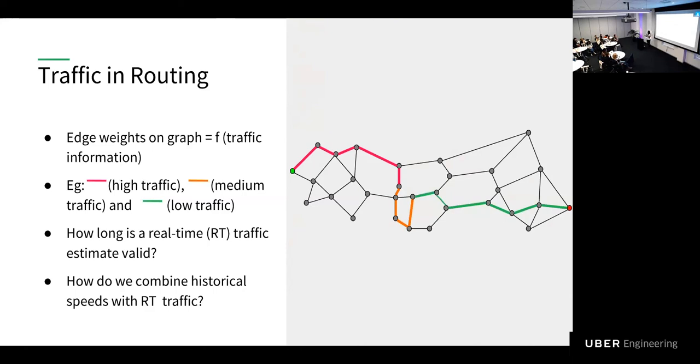And there are some questions that are worth exploring in traffic that can really influence the quality of our traffic estimation. One of the question is, how long should a real-time traffic estimate that we find on a segment be valid? If it's too long, then it's going to be stale and not representing the world. If it's too short, then we haven't exploited the information from that traffic feed. So really understanding when to draw that line is one of the questions that we're still trying to understand better. And another question is, how do we combine historical speeds, which is aggregated data over a long period of time, with real-time speed information?